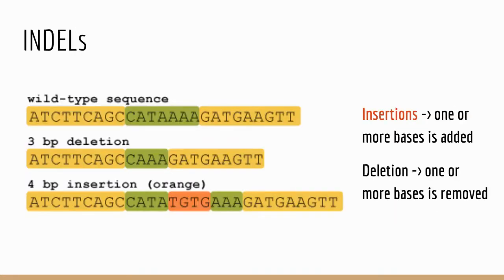The next type of mutation you were introduced to were indels, or insertions and deletions. An insertion is where you add one or more bases — you can see that here in the orange, with the tandem repeat of the thymine and the guanine. Deletions, on the other hand, are where you remove one or more bases. In the middle row, you can see the three adenines that were removed.